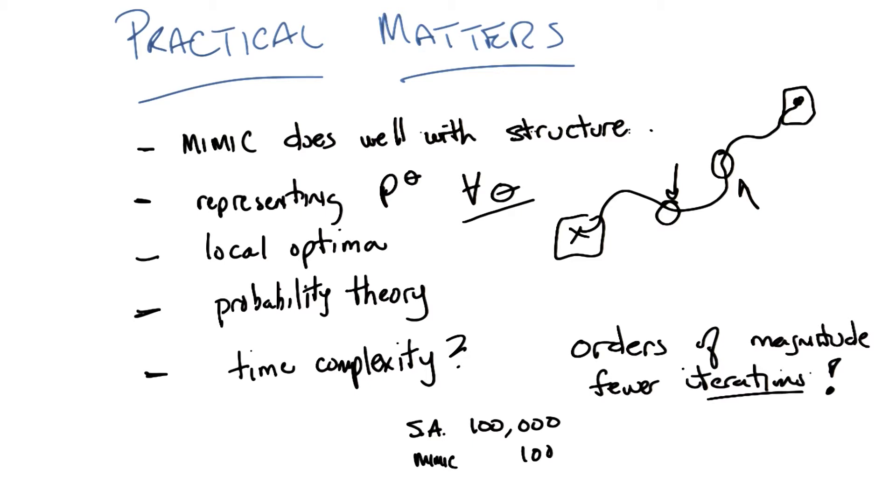Another way of thinking about structure in this case is you're getting information. You get a lot more information because you get structure. You get a lot more information per iteration as well. So that's the price you're paying. You're getting more information every single time you do an iteration at the cost of building these maximum spanning trees or whatever it is you're doing in estimating your probability distribution.